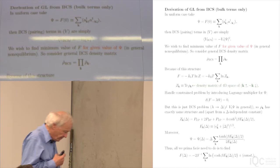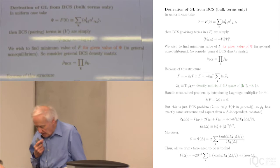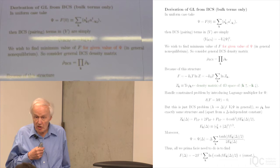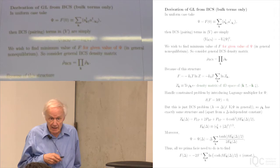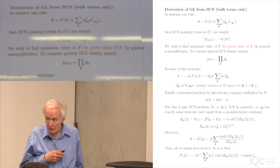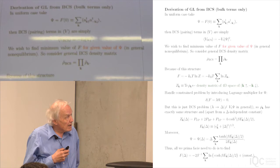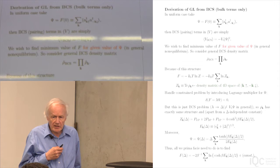Just to recap: the Ginzburg-Landau theory of superconductivity is a special case of the Landau-Lifshitz theory of second-order phase transitions, and was actually developed before the advent of a microscopic theory — the BCS theory. What is nice about the Ginzburg-Landau theory is that it enables you to deal with situations which are not in bulk equilibrium, in a rather straightforward and elegant way.